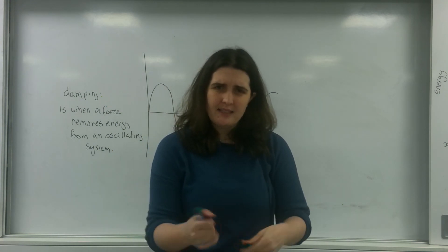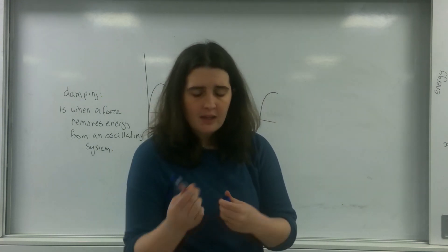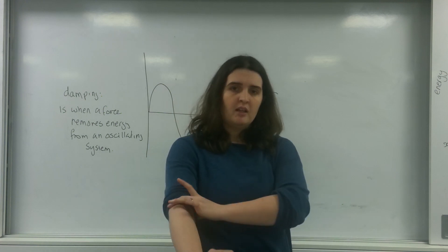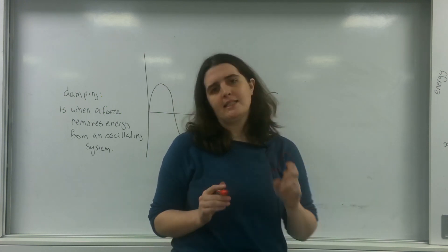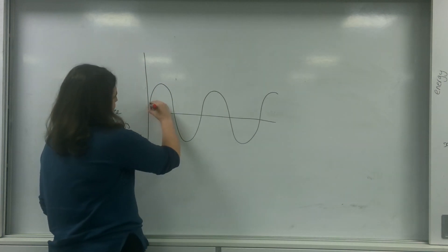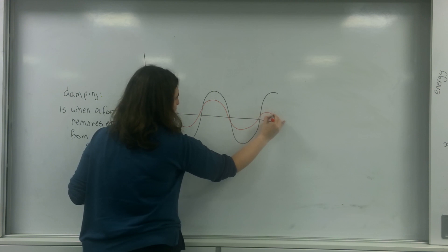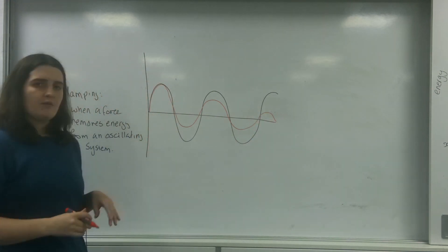There are three ways that damping can occur. There's heavy, there's light, and there's critical. I'm going to start with light damping, which is something where the oscillation decreases over time.